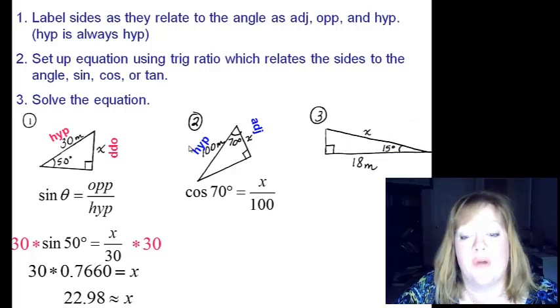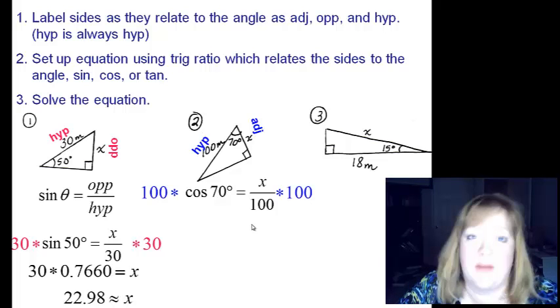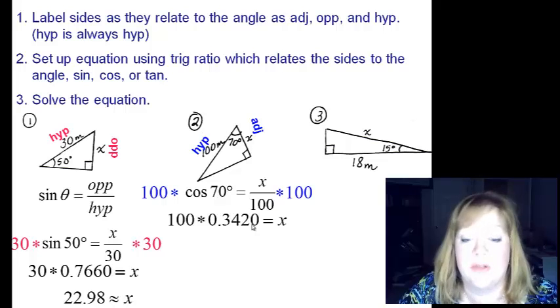So we're going to have cosine of seventy is my adjacent, which is x divided by one hundred. Then I just multiply both sides by one hundred. One hundred times cosine of seventy, you can type that right into your calculator and hit equals, and you should get approximately thirty four point two.